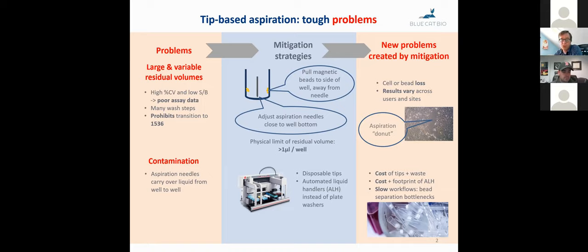So if you have a large residual volume, that means that you have a lot of background in your data. If it's variable, that means you have a lot of percentage CV. And so you will need many wash steps. And as you get into denser and denser plate formats, particularly 1536, it's really hard to do.